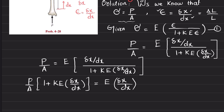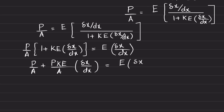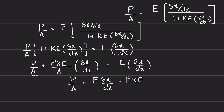Expanding the left side: P over A plus P times k times E divided by A times (delta x over dx) equals E times delta x over dx. Leaving P over A on the left side: P over A equals E times (delta x over dx) minus P times k times E divided by A times (delta x over dx).